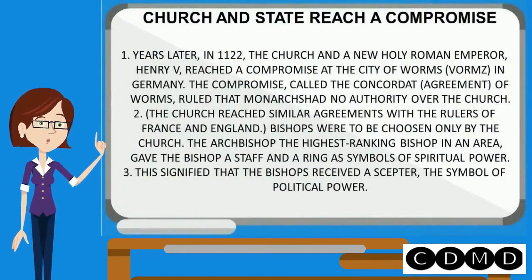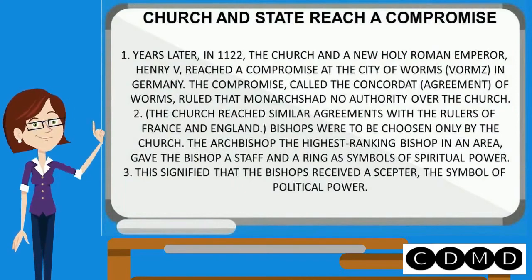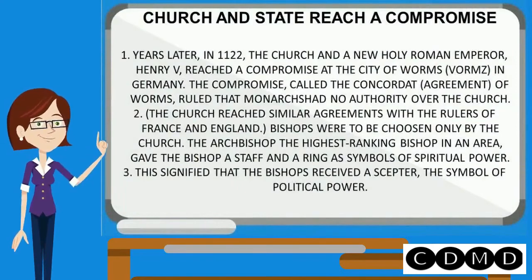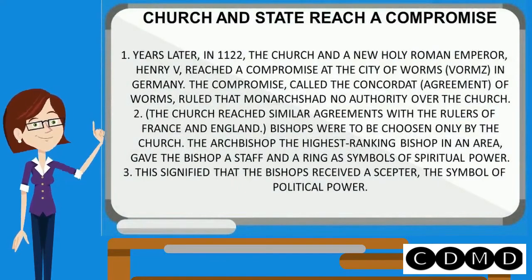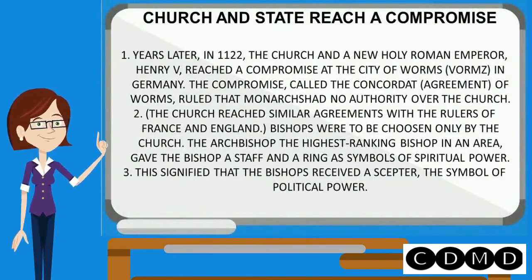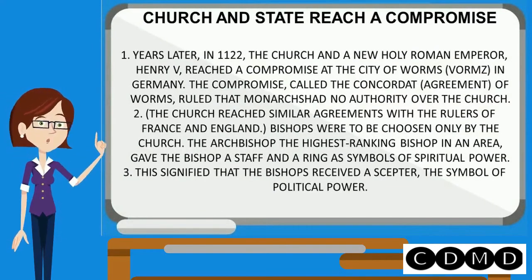Church and state reached a compromise. Years later, in 1122, the church and the new Holy Roman Emperor, Henry V, reached a compromise at the city of Worms. The compromise, called the Concordat of Worms, ruled that monarchs had no authority over the church.